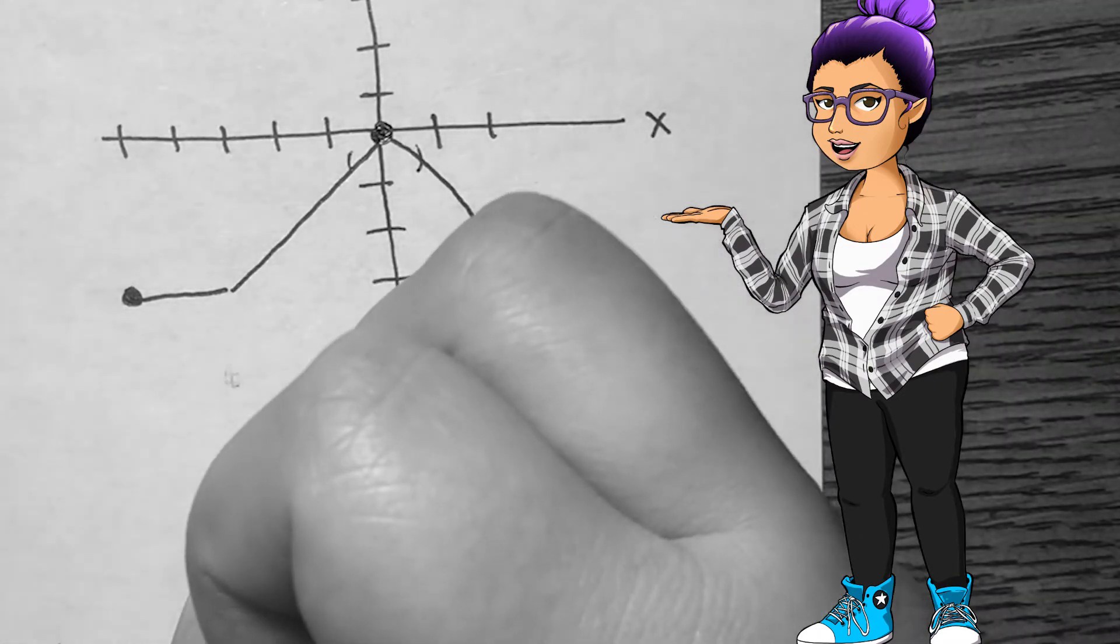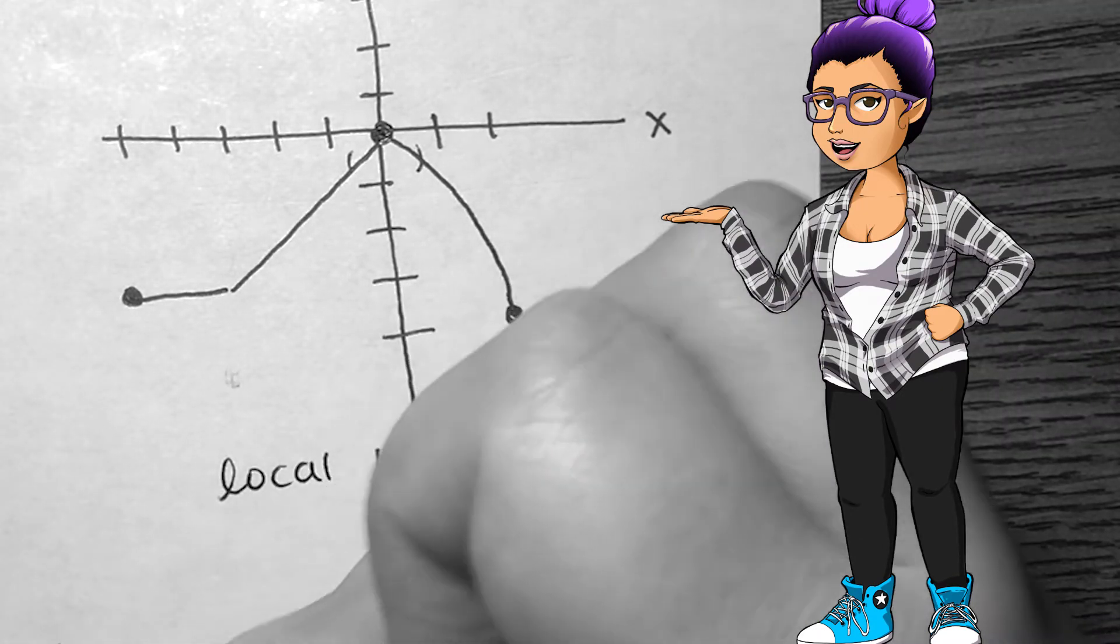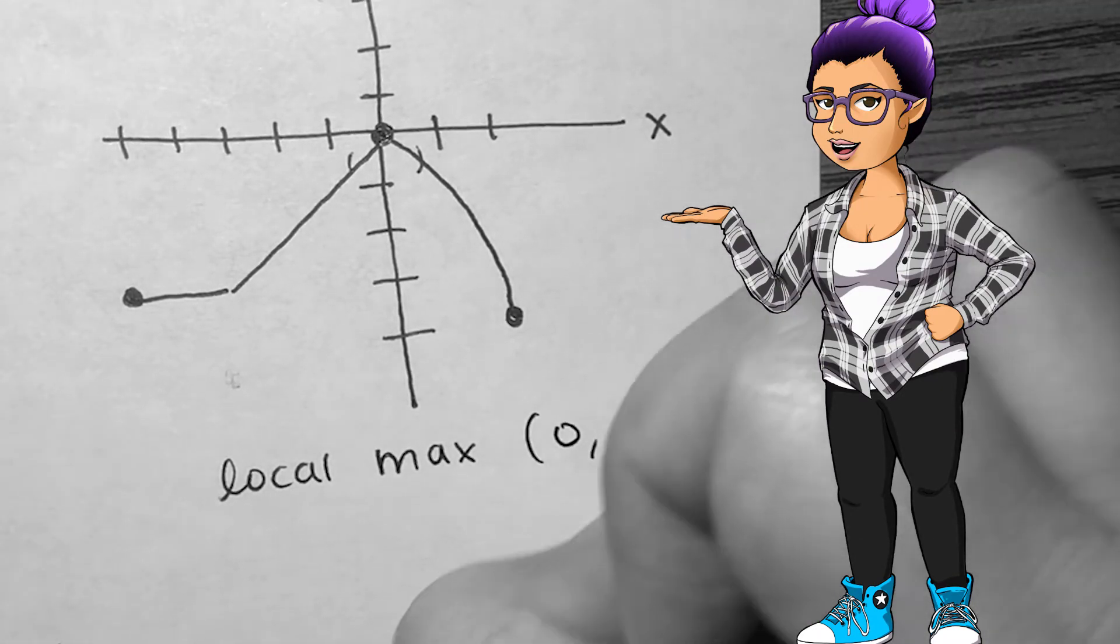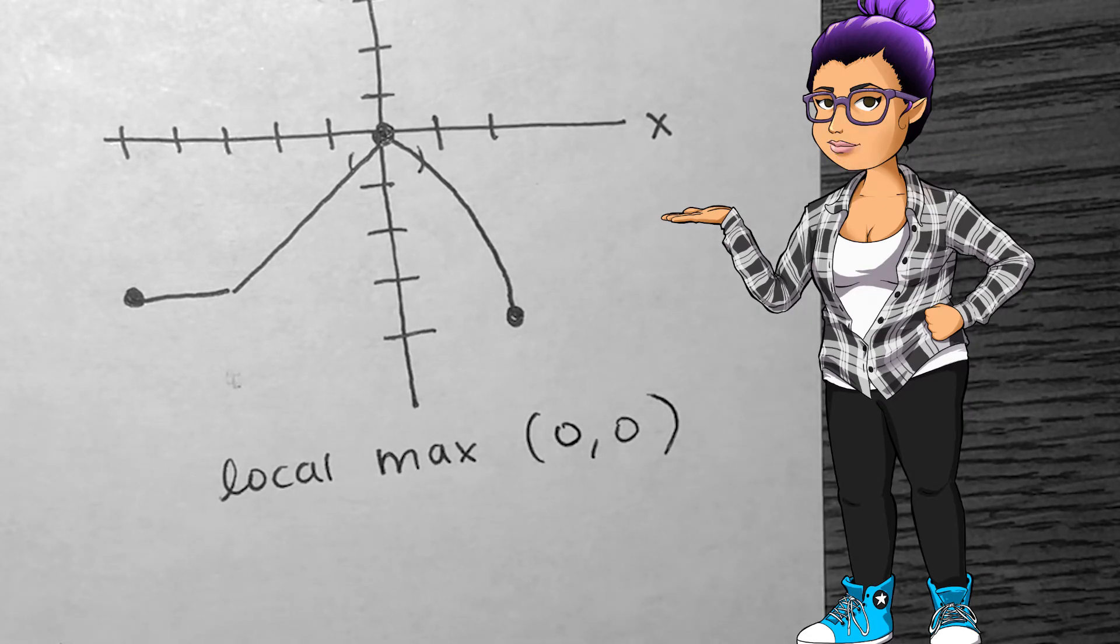Since we can find an interval around where x equals 0 so that f of 0, which is 0, is the largest output, we have a local maximum at (0, 0).